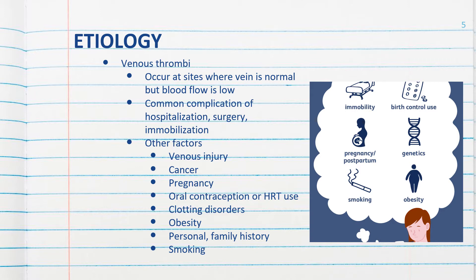Other factors associated with venous thrombosis include venous injury, cancer, pregnancy, oral contraceptive use, hormone replacement use, clotting disorders, obesity, history of DVT — whether personal or family history — and smoking certainly is a cause that can result in DVTs.